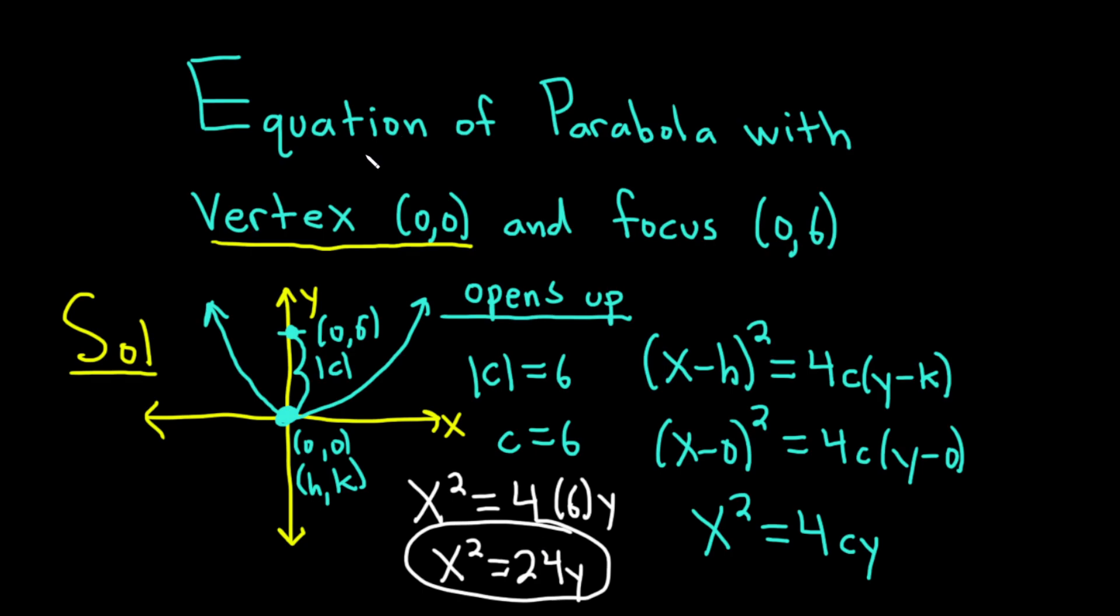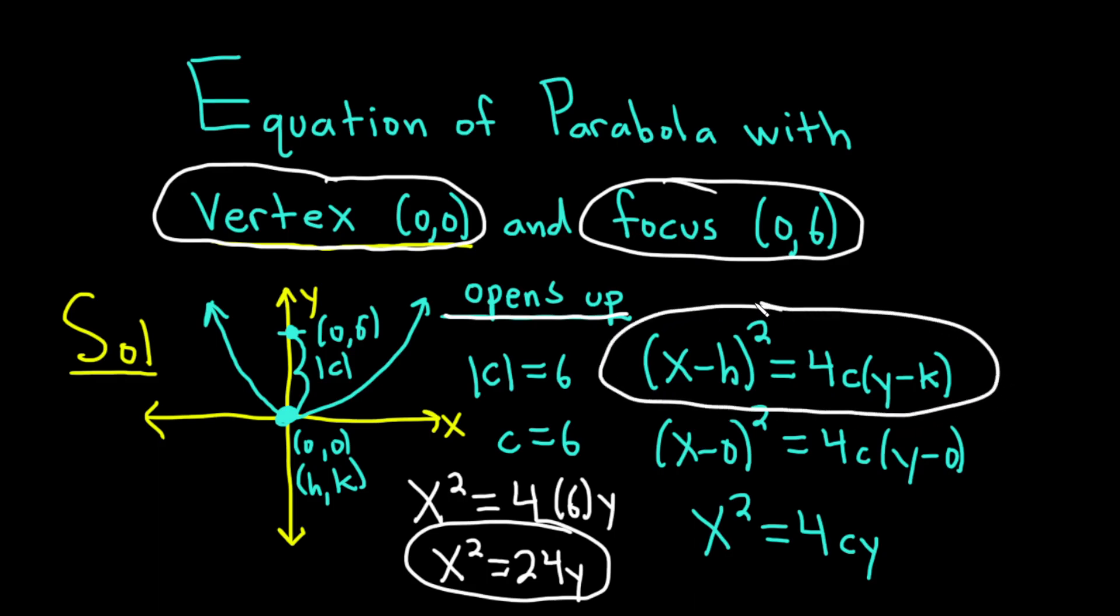So recap. When you first see a problem like this, the first thing you want to do is plot your information. And then we use the fact that the parabola opens towards the focus. So that told us that it opens up. Because it opens up, we use this formula. Because parabolas that open up or down use this formula. And then we plugged in the vertex and ended up here.